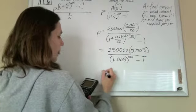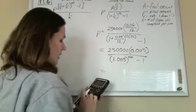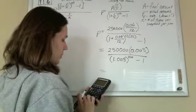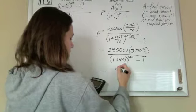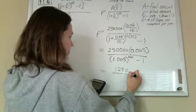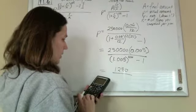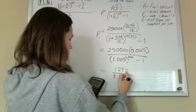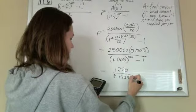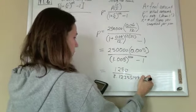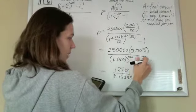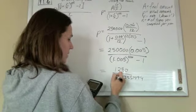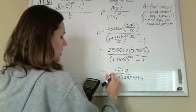So now we're going to take care of the top. 250,000 times 0.005 gives me 1,250. So 1.005 raised to the 420 is 8.123551494, but I want to subtract 1, so instead of 8, I'm going to make this 7. Then just do that division.